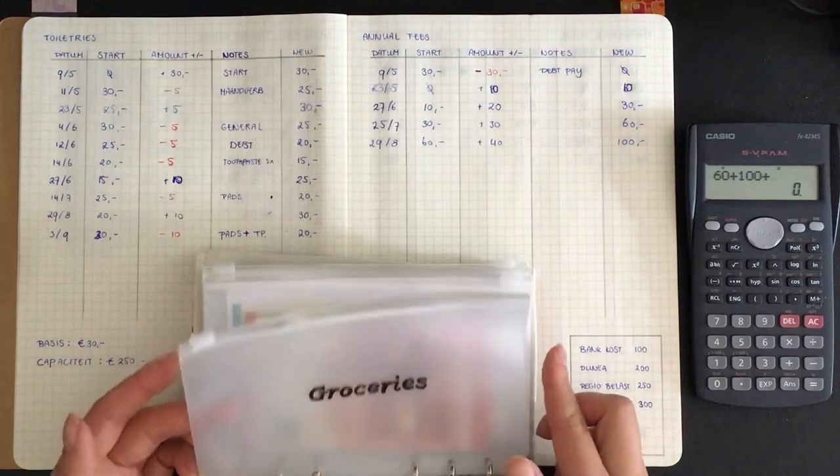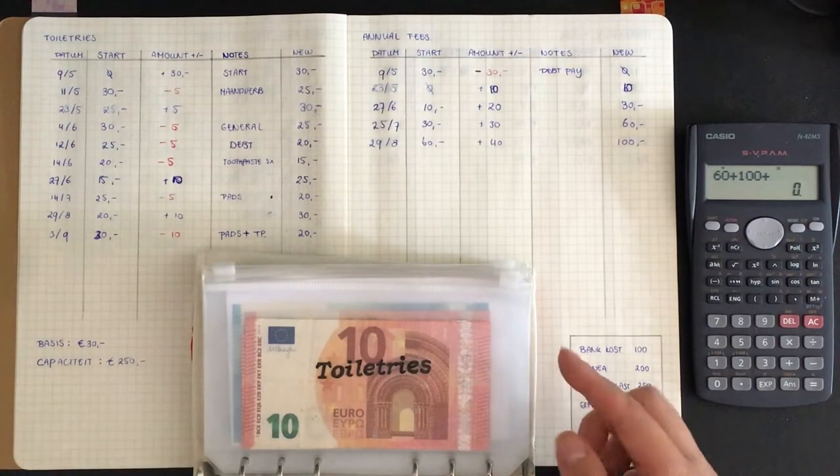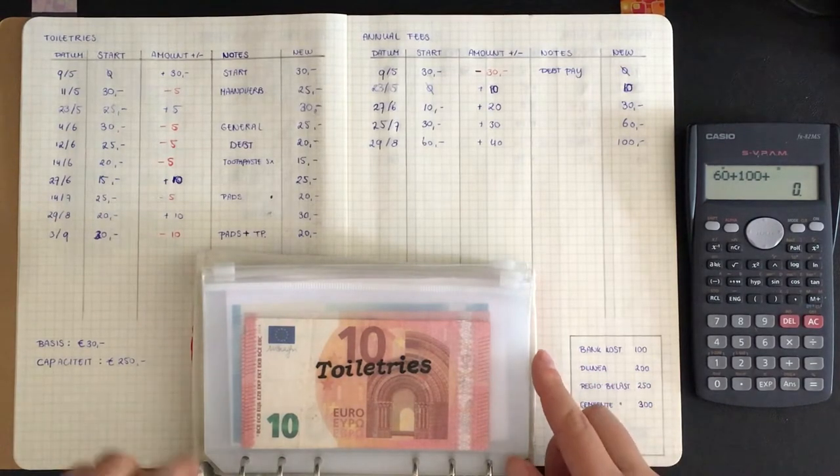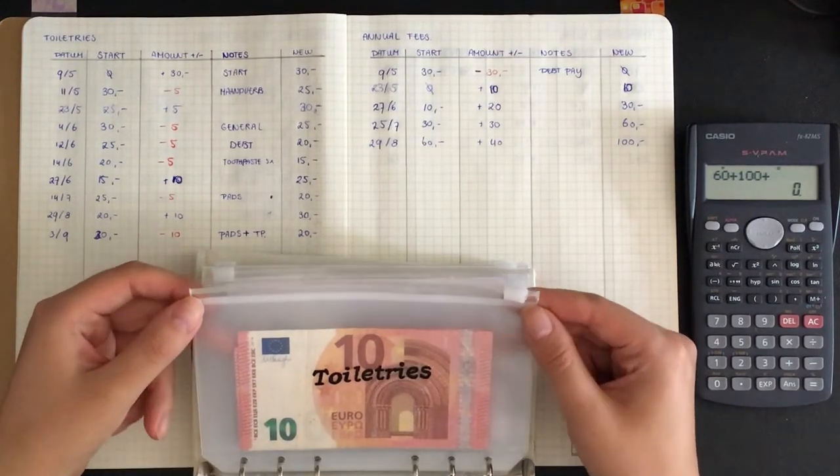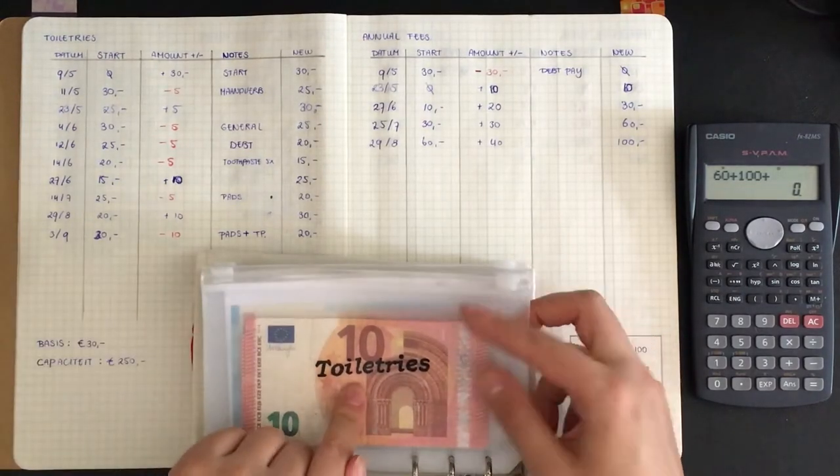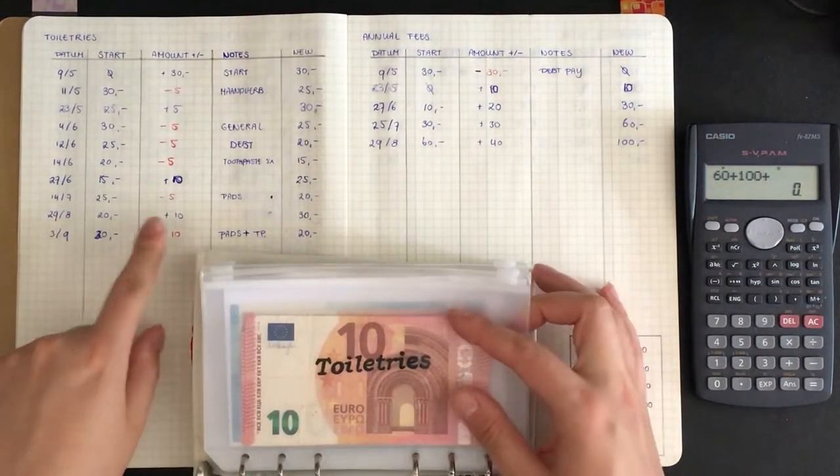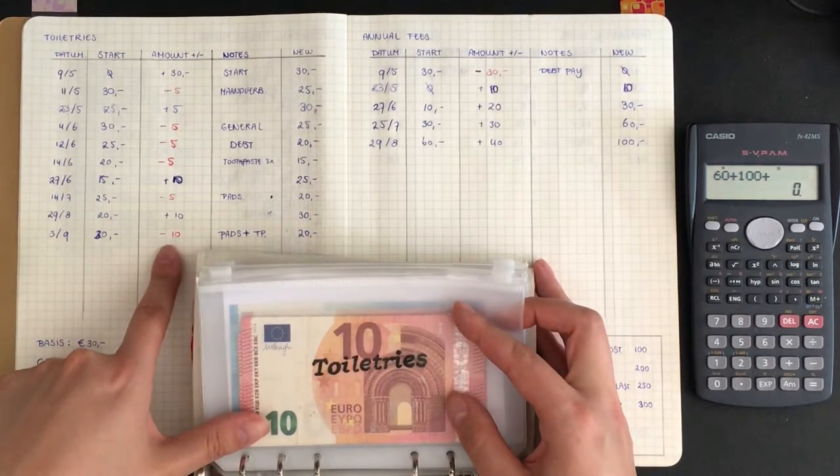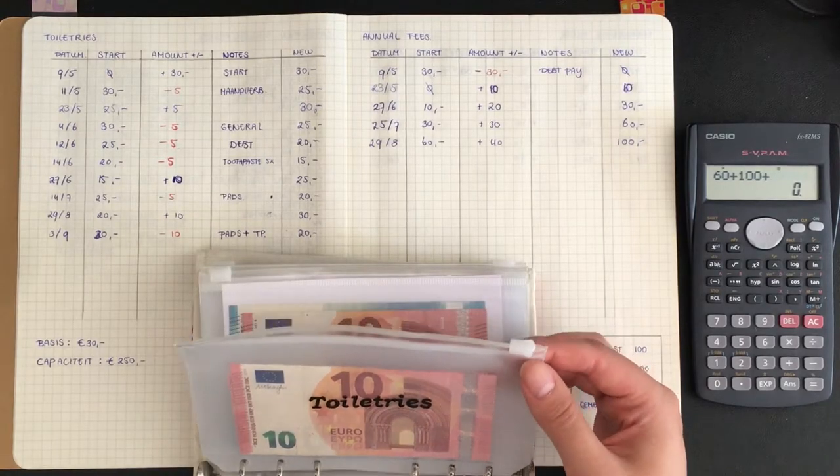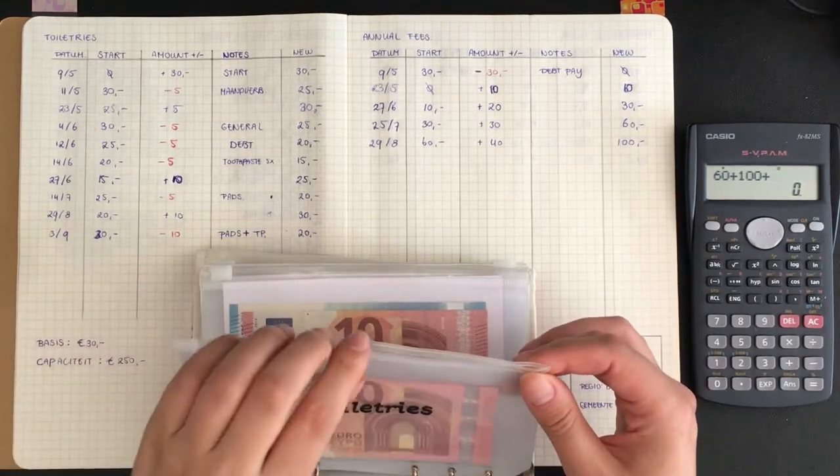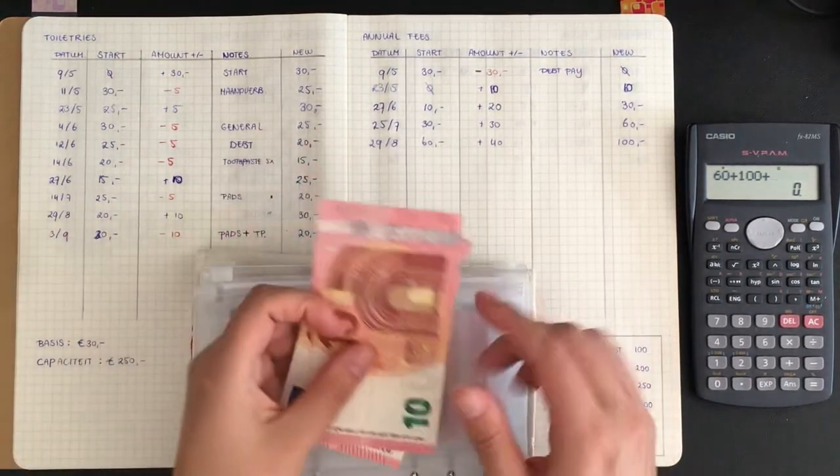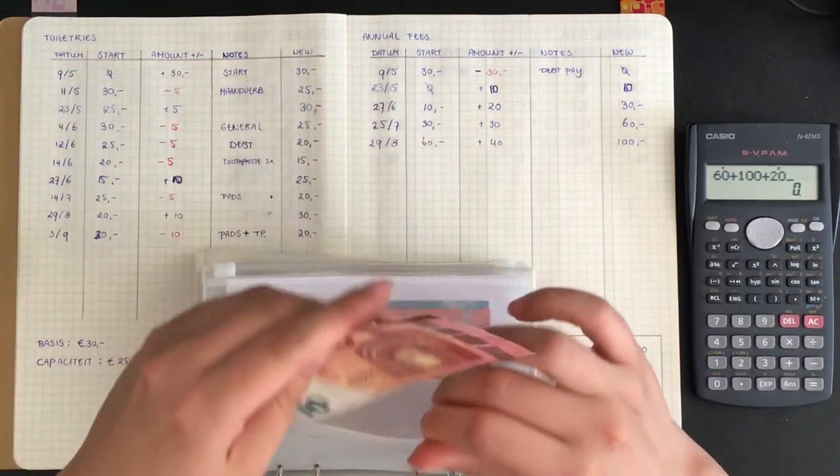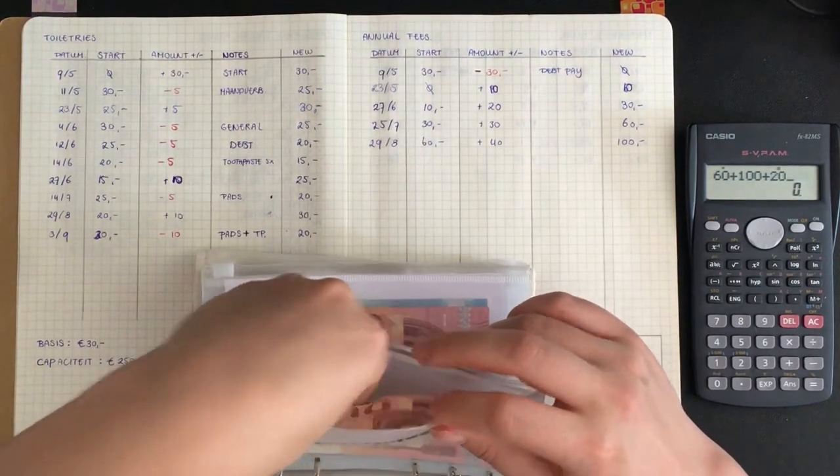Groceries has nothing because I used everything. I need to get some new ones, or at least I need to go to the ATM to get my 30 euros for this week. Toiletries: on Friday I used 10 euros for some menstrual pads and toilet paper. So there should be 20 which there is. So we add another 20.